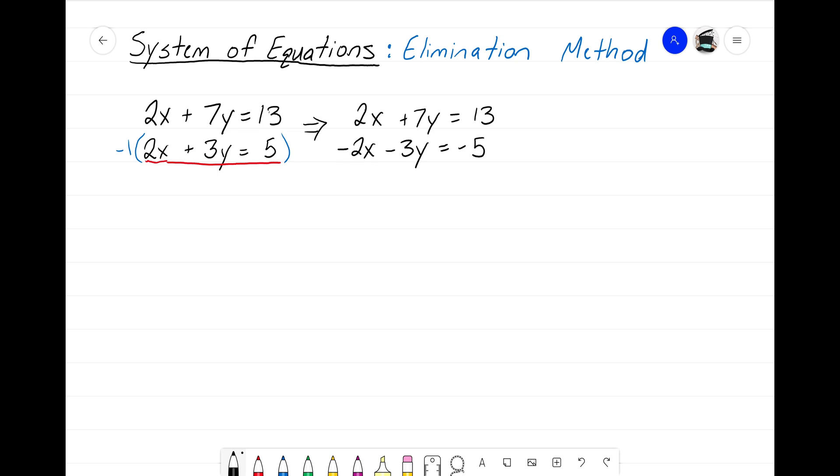We're just changing the signs to manipulate it so that when I do put the big plus sign and I do put the big equal sign. Now, when I add these two variables together, 2x plus negative 2x, they will zero out. Now I can start solving this equation and seeing how we can get rid of that x variable.